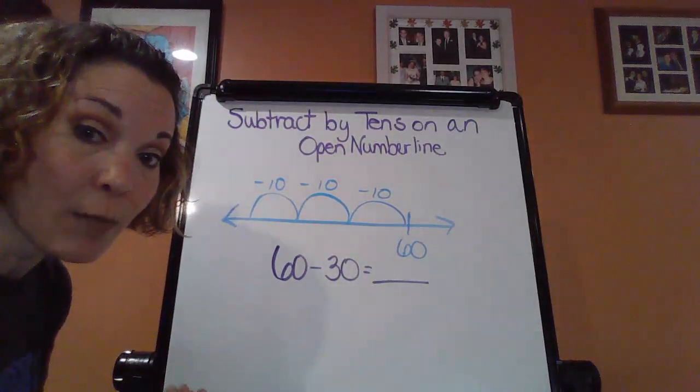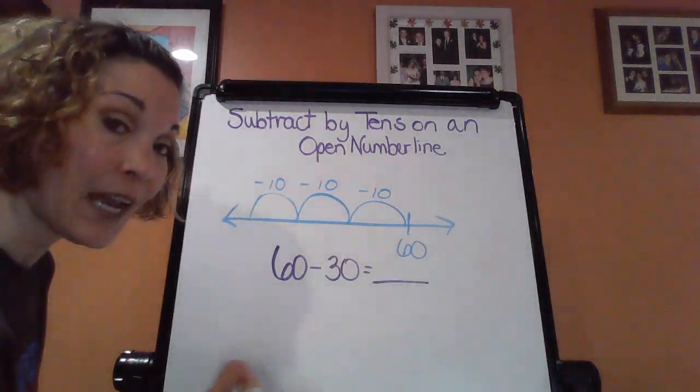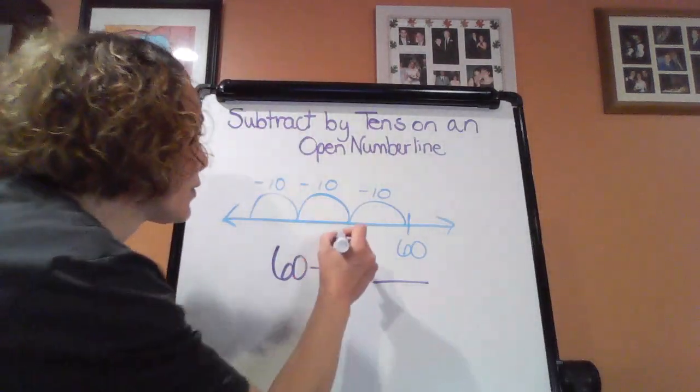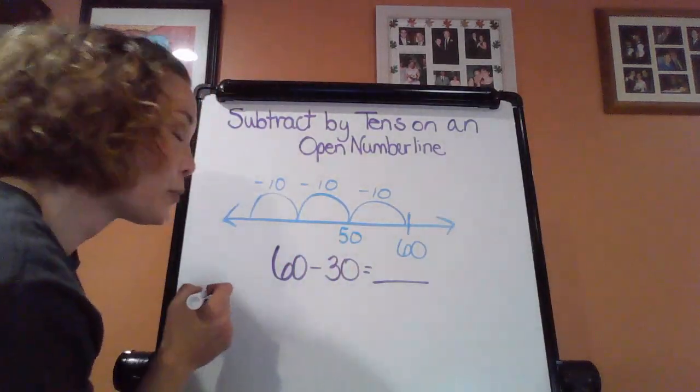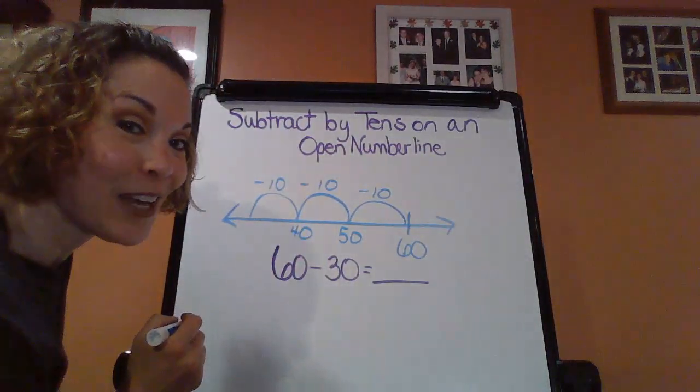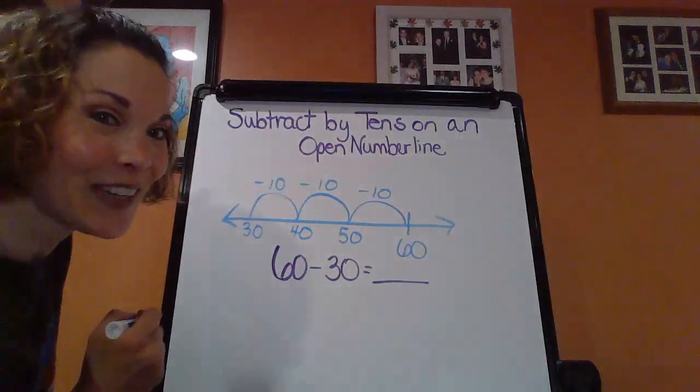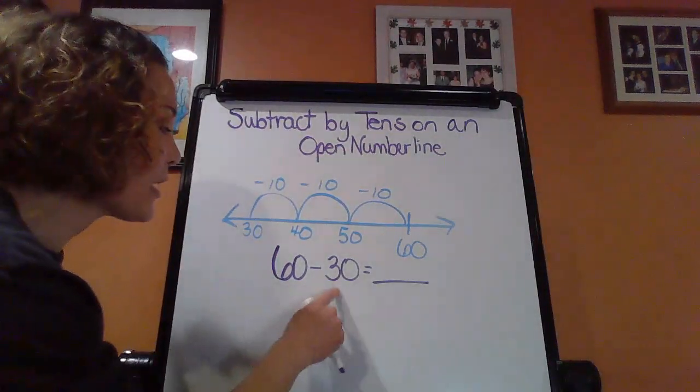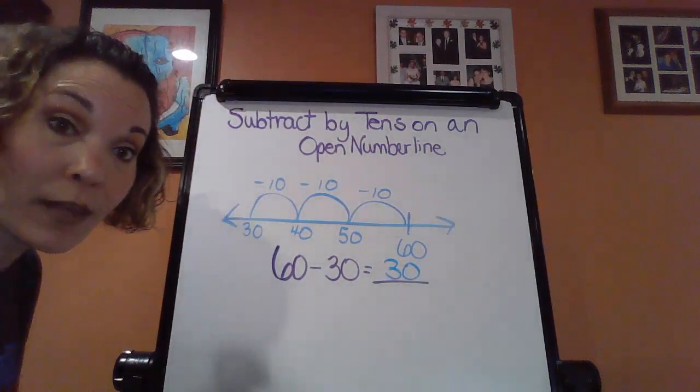So now here we go. Now we really want to start counting back starting at 60. Start thinking 10 less, 50, 40. And one more, 30. So here's 60 minus 30. My difference here is going to be 30.